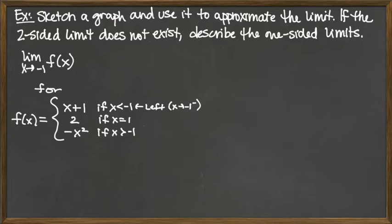The middle piece is f of x equals 2 if x equals negative 1. This is really just a point — the input value x equals negative 1 with the output value y equals 2. The last piece is the downward-opening parabola y equals negative x squared if x is greater than negative 1, which represents the right-hand side.